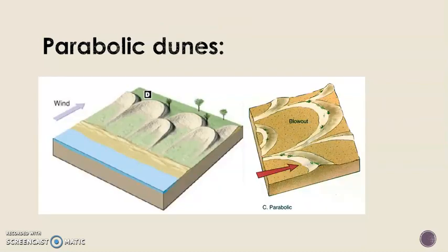Next, parabolic dunes. These are associated with blowouts — basically the hollows formed by the removal of particles due to wind. They may appear similar to barshans but in the opposite direction, and they are longer and narrower than barshans. These are usually encountered in coastal regions.